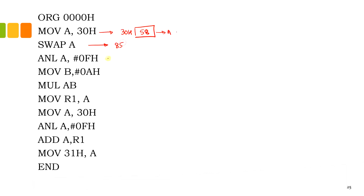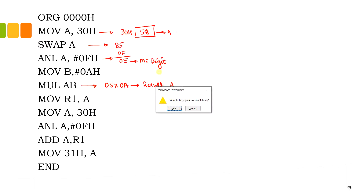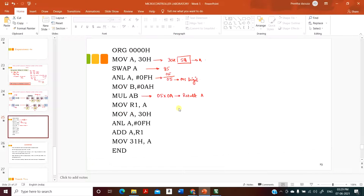That has to be moved to the accumulator. When you swap the content in the accumulator, 58 becomes 85. Then you perform masking — when you mask with 0F, this becomes 05, so you have obtained the upper nibble. Now you are going to perform the multiplication with 0A. This is the MS digit and it has to be multiplied with 0A, so B register is moved with 0A. On multiplying 05 with 0A, the result will be stored in the accumulator, which was 32.